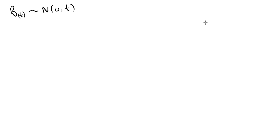Hello and welcome to this lesson. Today we're going to prove that the Brownian motion is a martingale. To do so, let's recall that the Brownian motion is normally distributed with mean zero and variance equal to time. Let's start the process.